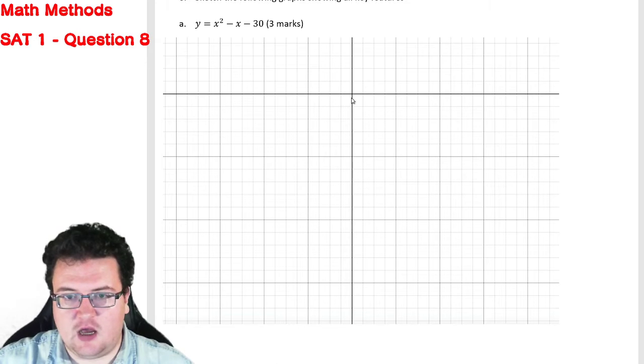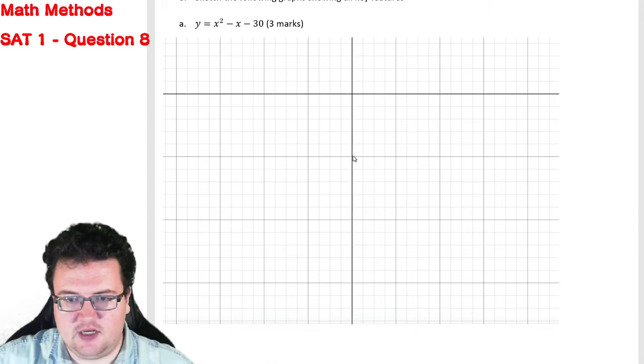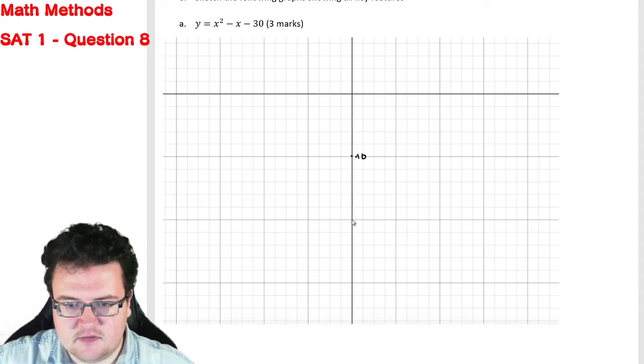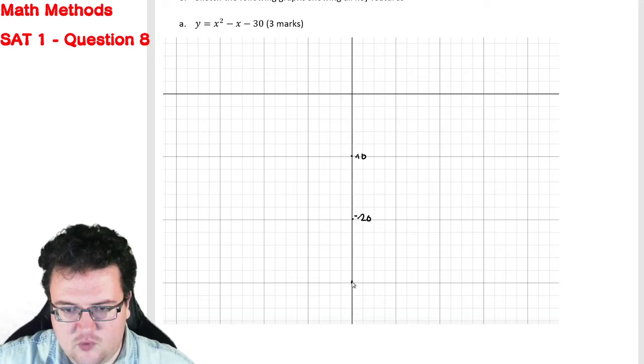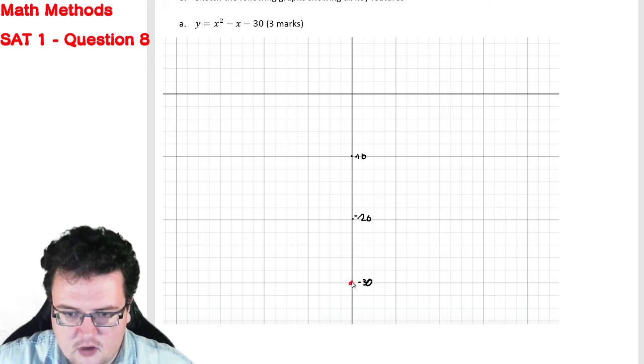Looking here, I've got a bit of space to play with, but what I'm going to do is say that this is minus 10, this is minus 20, and this point here is going to be minus 30, which means that I have a point here.